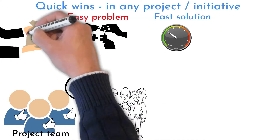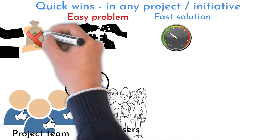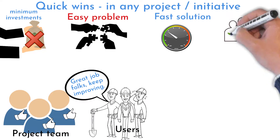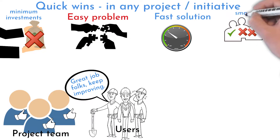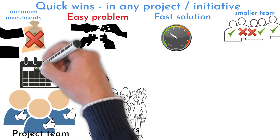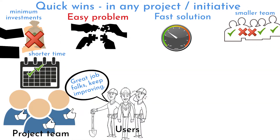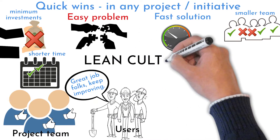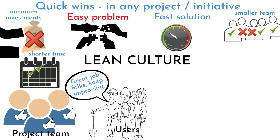Quick wins require no or very limited investment, involve a small team, and are implemented within a few days or weeks. These fast changes are signs of a lean culture being well implemented.